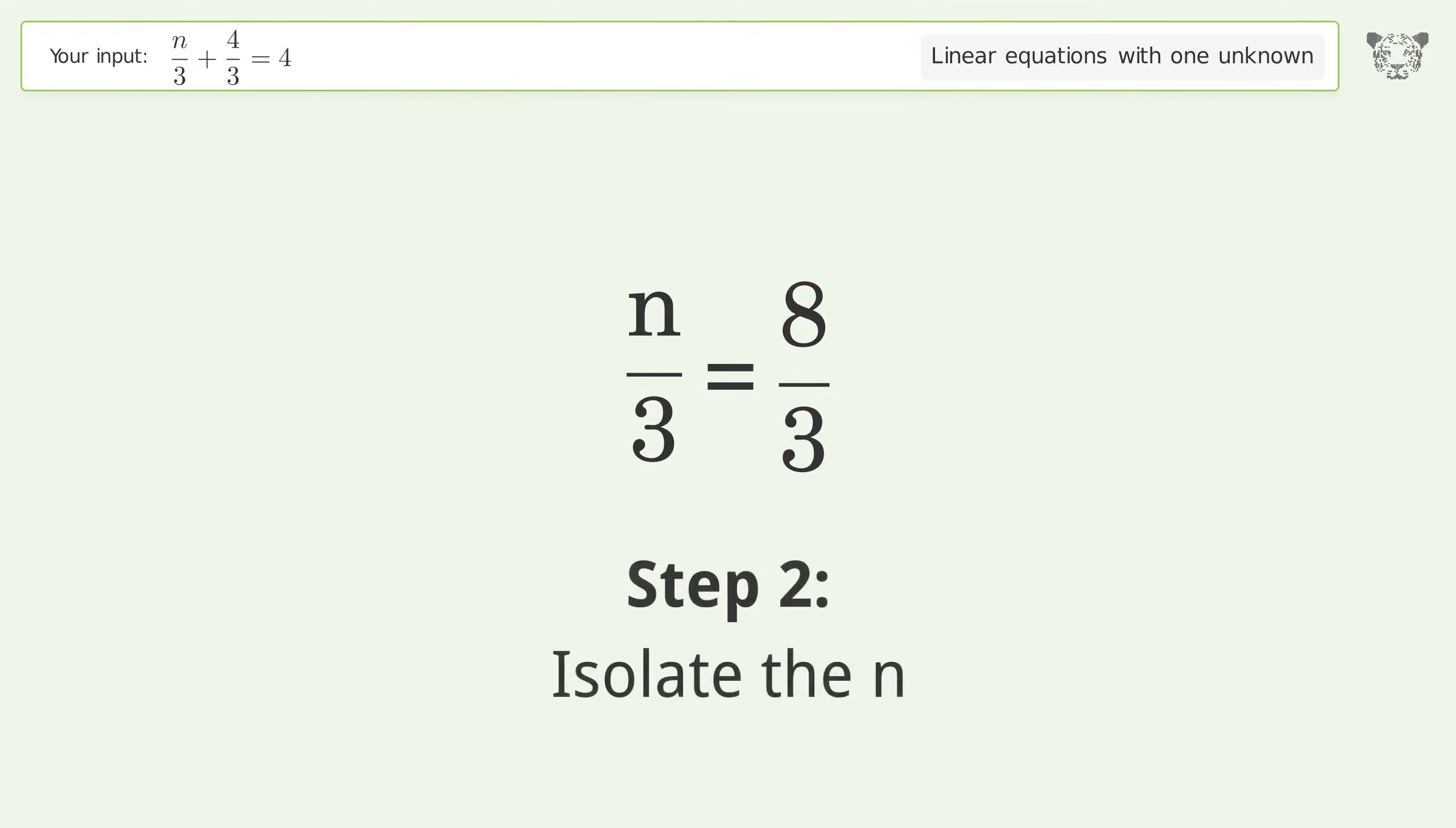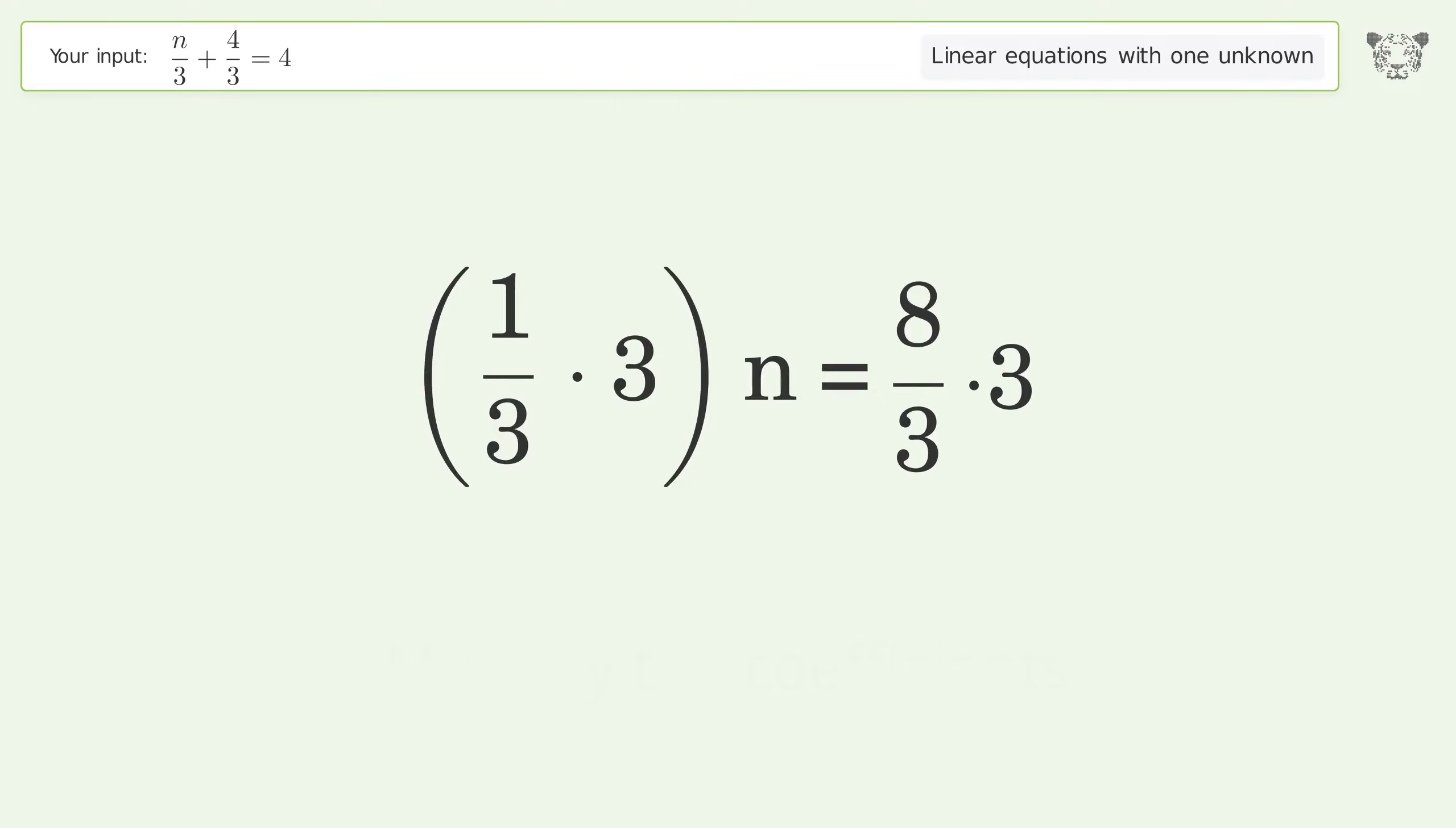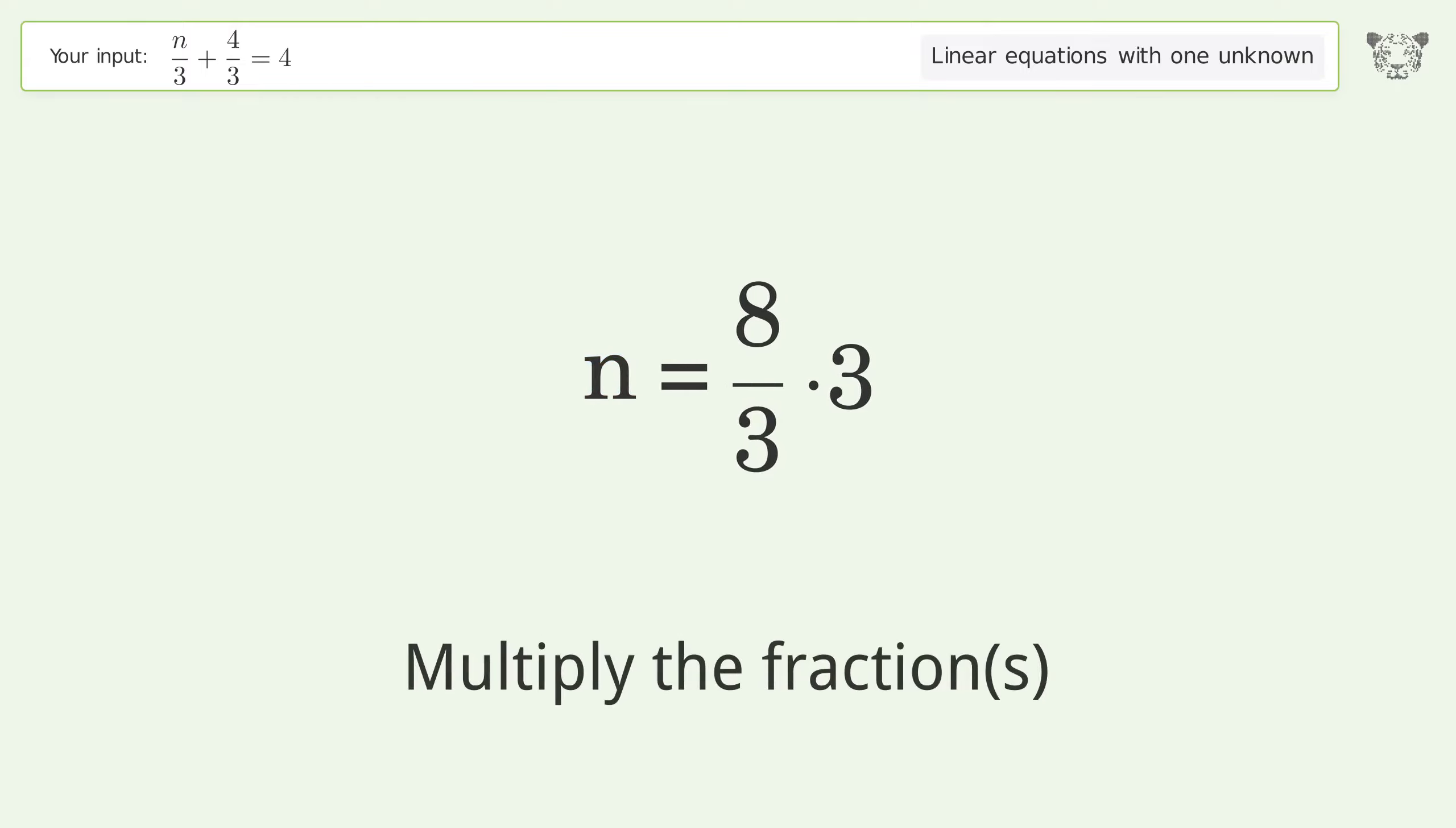Isolate the n. Multiply both sides by 3. Group like terms. Multiply the coefficients. Simplify the fraction. Multiply the fractions. Simplify the arithmetic.